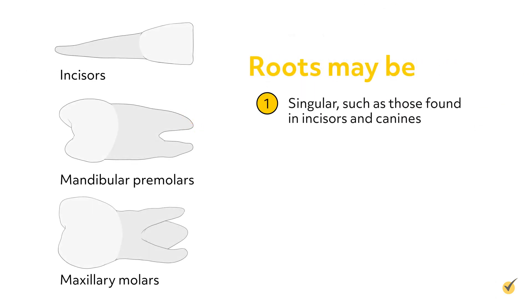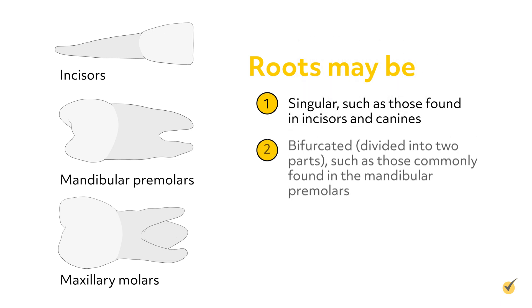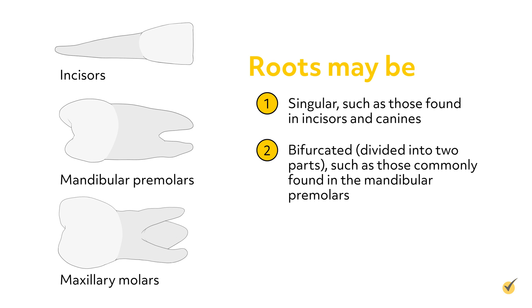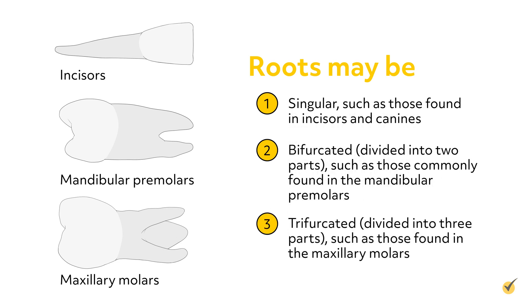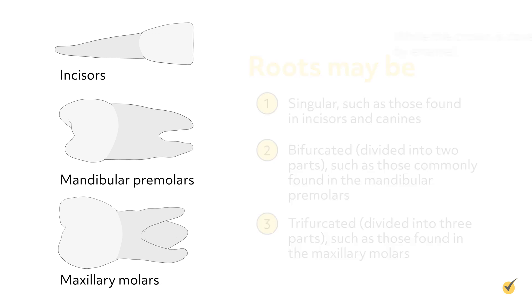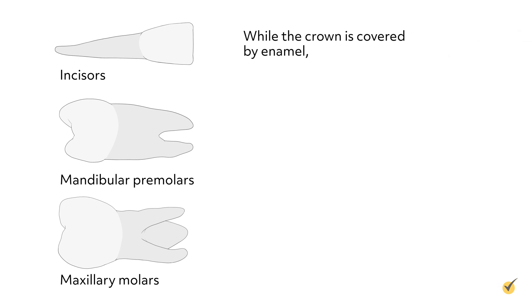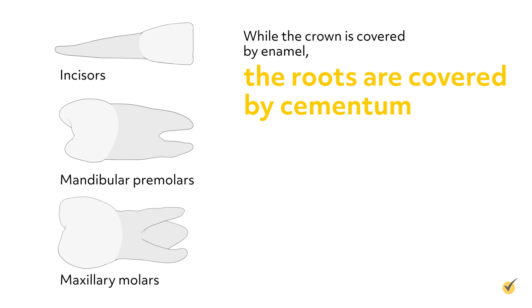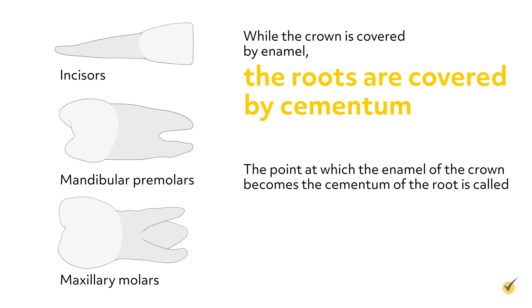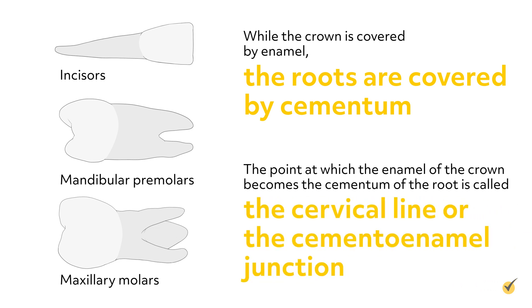Roots may be singular, such as those found in incisors and canines; bifurcated, which is divided into two parts, such as those commonly found in the mandibular premolars; or trifurcated, divided into three parts, such as those found in the maxillary molars. While the crown is covered by enamel, the roots are covered by cementum. The point at which the enamel of the crown becomes the cementum of the root is called the cervical line, or the cementoenamel junction.